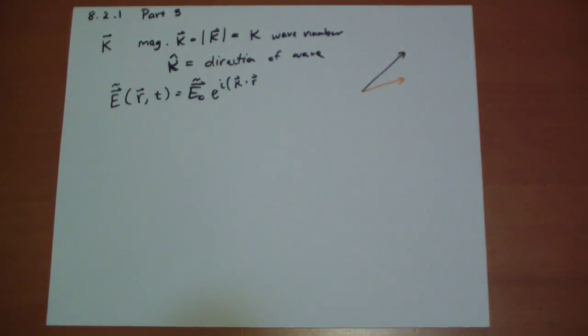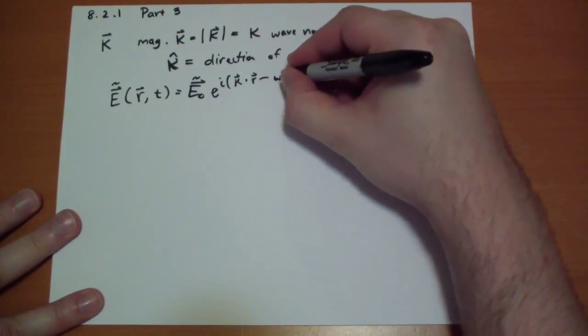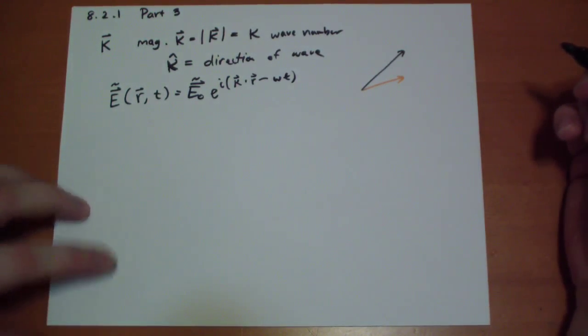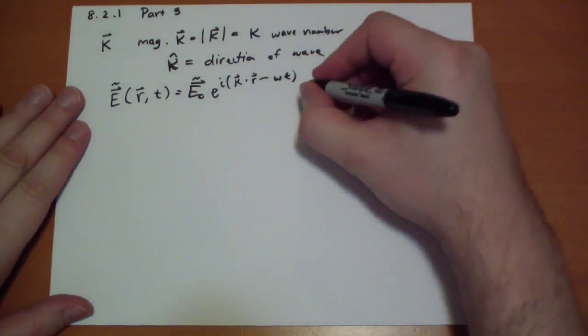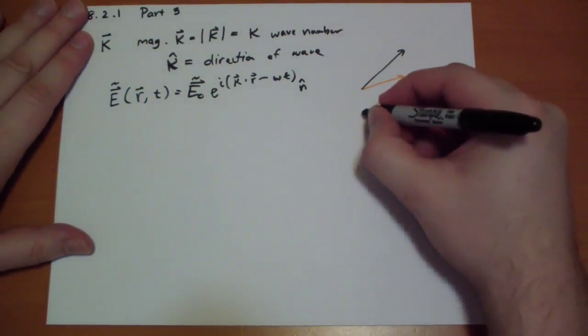When the two align, that's when you get the fastest rate of change of the waves. But when the two are perpendicular, then it doesn't matter how far you move in the R direction, you're not going to get a different value for the wave. Minus omega t, of course, and the direction of the electric field at the point is described by this n-hat vector. What is n-hat? N-hat is the polarization vector.